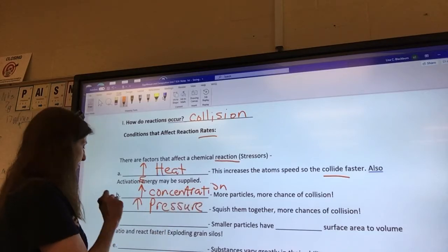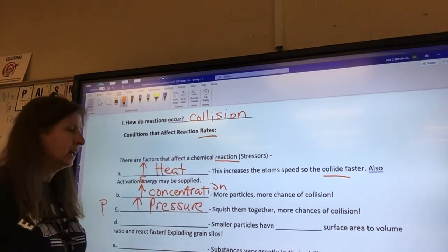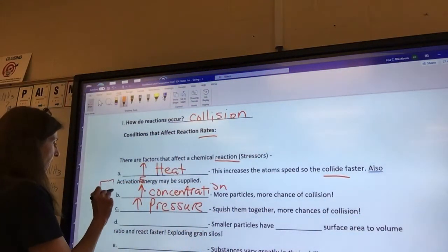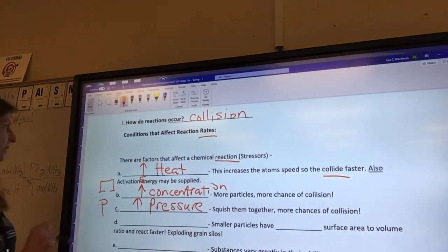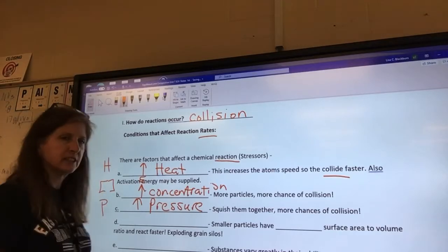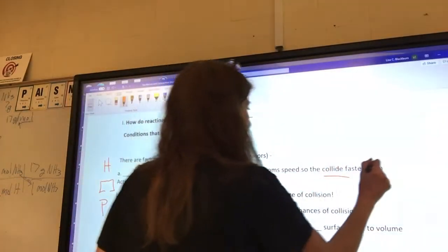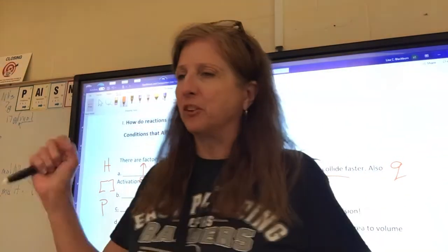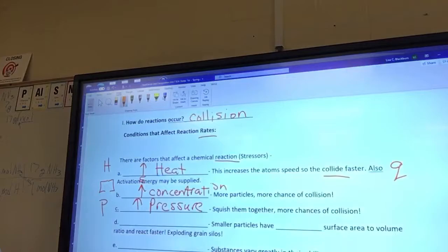We can add more particles, so there's more chance of collision. There's another one. What can we add? Pressure. If you squish the particles together, they're more likely to collide, and they are more likely to react. So we can increase the pressure. In chemistry, capital P is the symbol for pressure. Square brackets are the symbol for concentration.